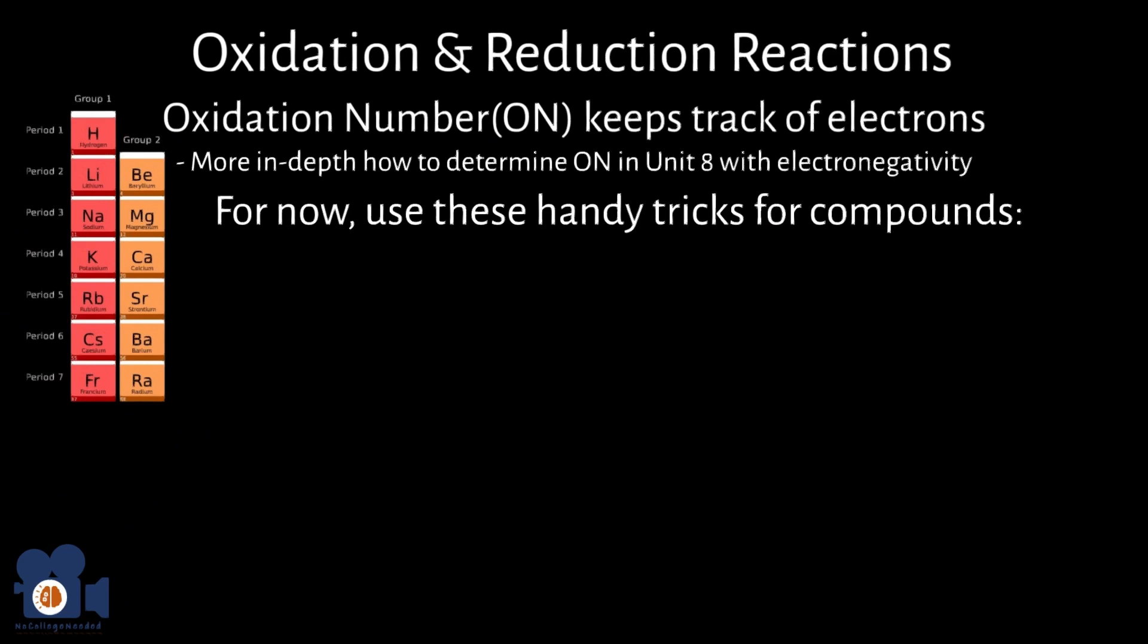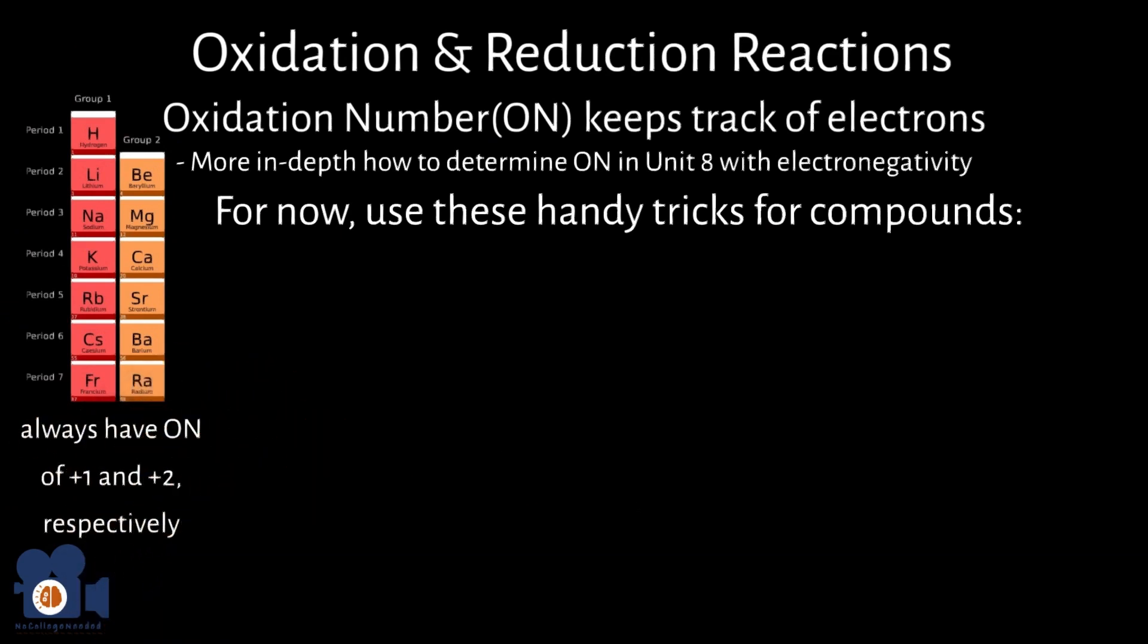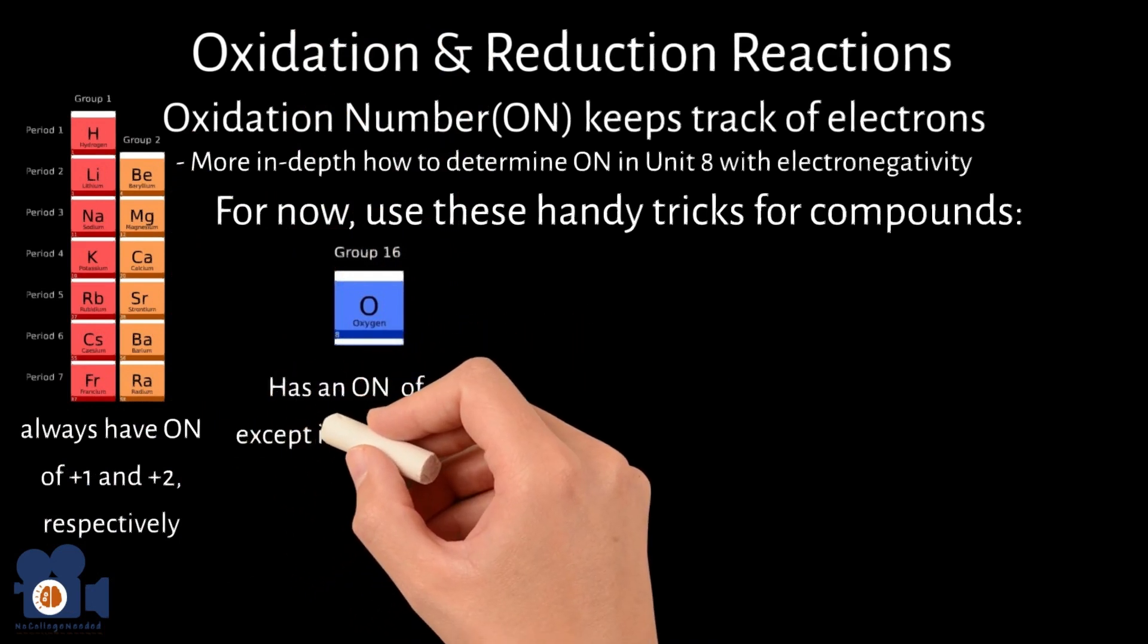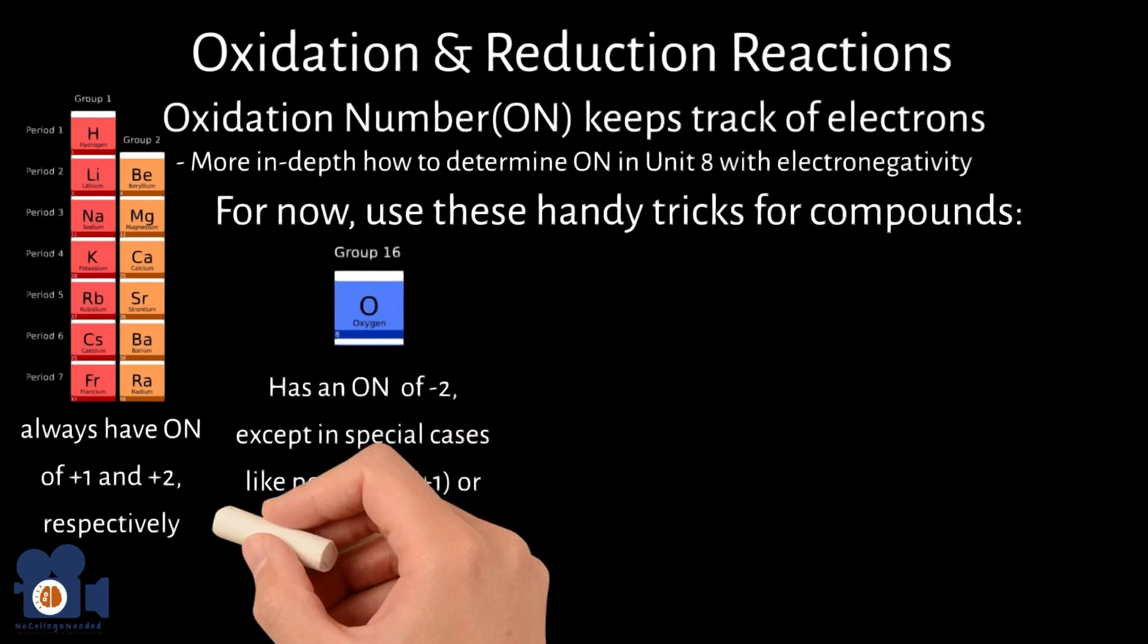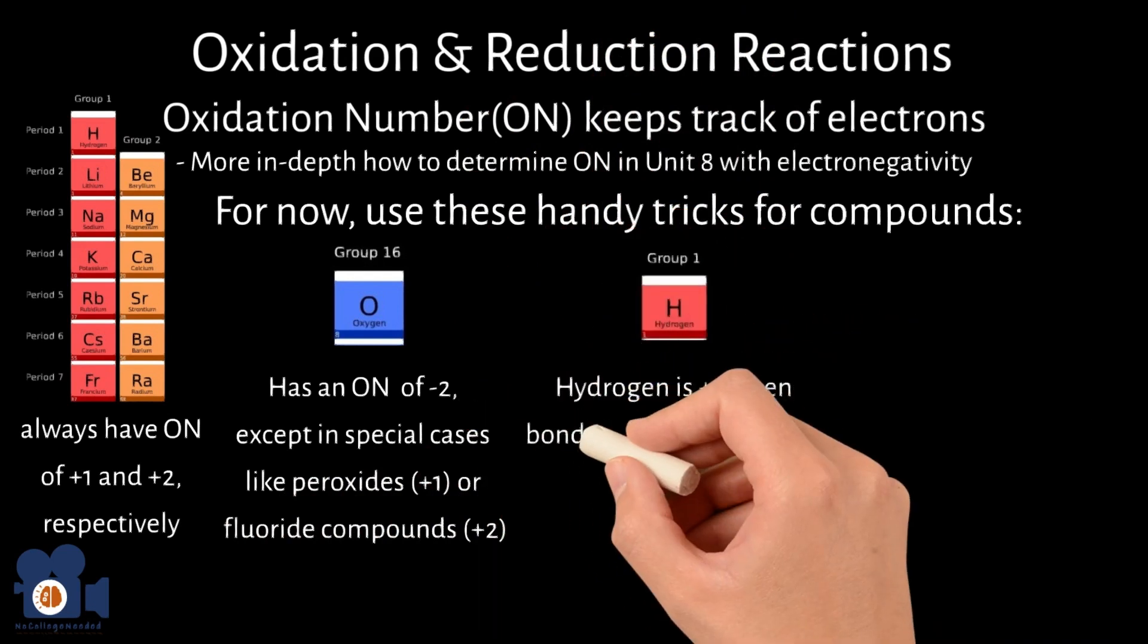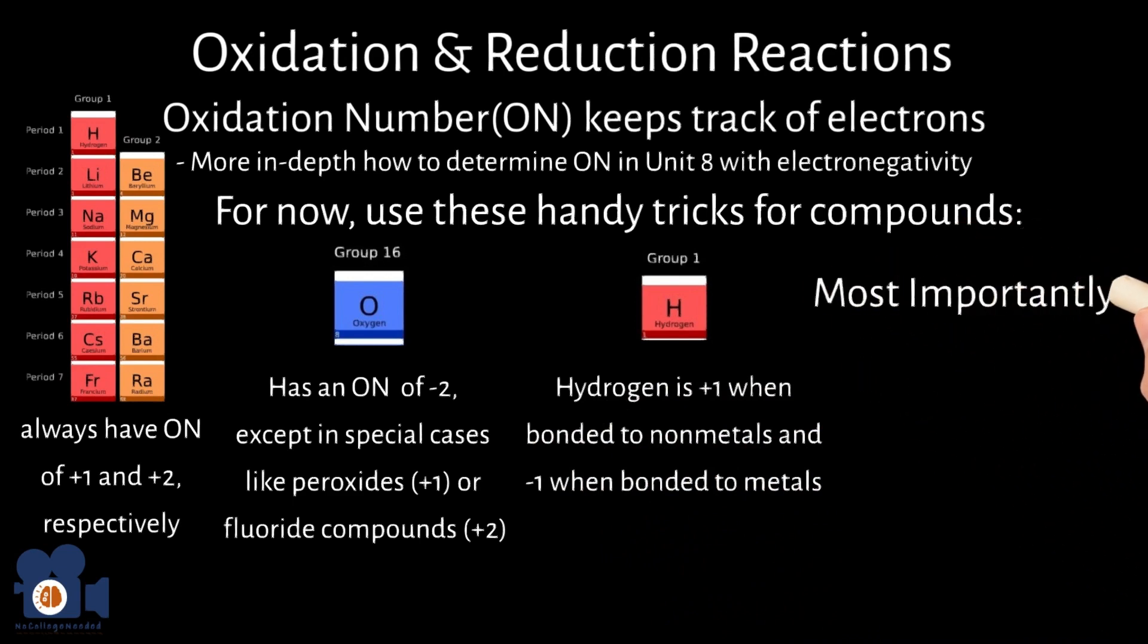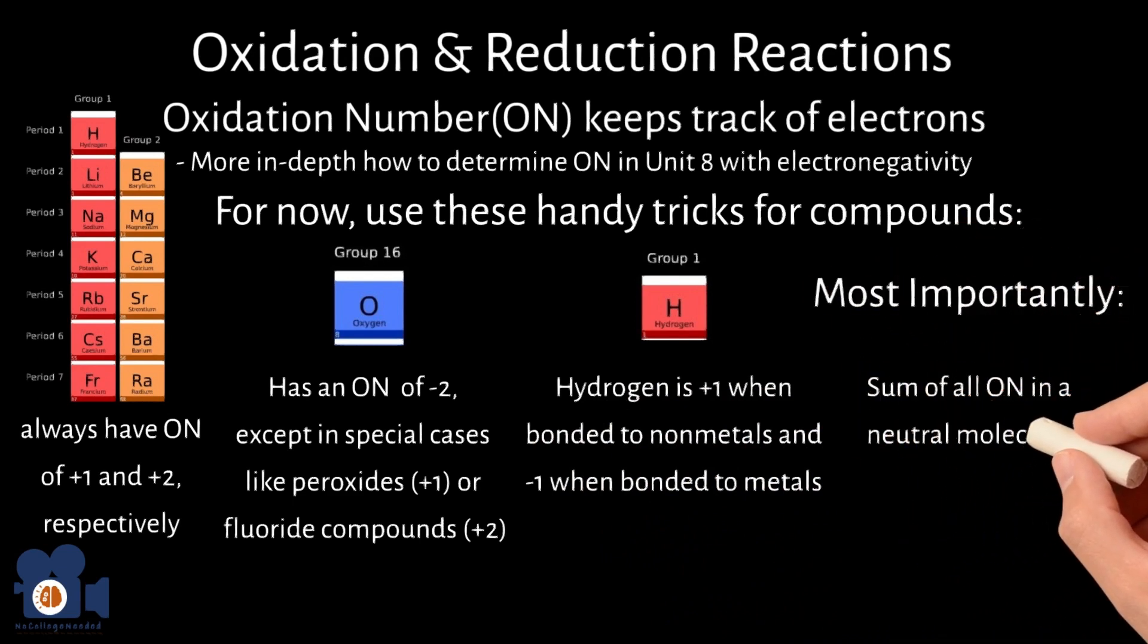Group one and two metals always have oxidation numbers of plus one and plus two, respectively. Oxygen usually has an oxidation number of minus two, except in special cases like peroxides, where it has a plus one, or fluoride compounds, where it has a plus two. Hydrogen is plus one when bonded to nonmetals and minus one when bonded to metals. Lastly, and most key of all, the sum of all oxidation numbers in a neutral molecule or compound must be zero.